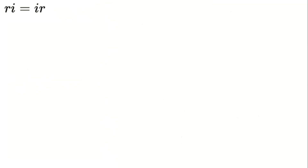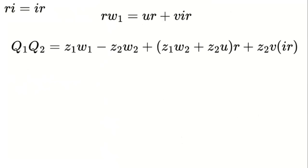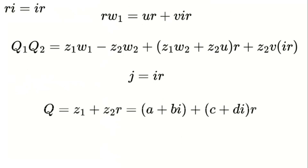Let's suppose for now that r and i do commute — that means r times i equals i times r. So r times w1 becomes u times r plus v times i times r. Going back to our full multiplication, we get z1 times w1 minus z2 times w2, plus the term z1 times w2 plus z2 times u, all times r, and finally z2 times v times i times r. But i times r is something we haven't named yet, so let's call it j. So j is defined as i times r, meaning q can be rewritten as a plus b times i plus c times r plus d times j.